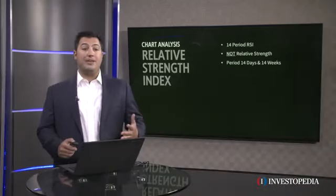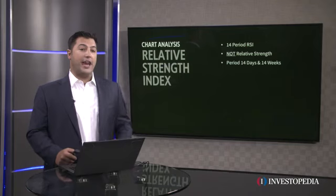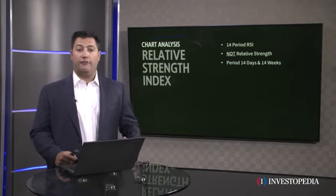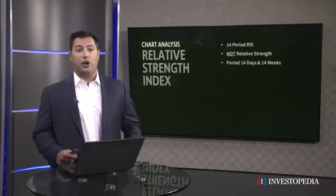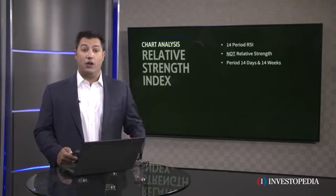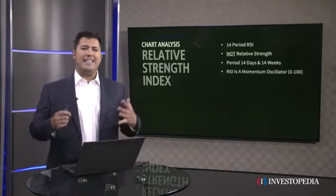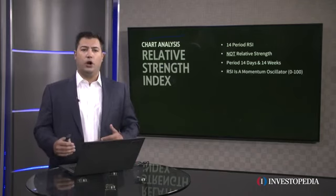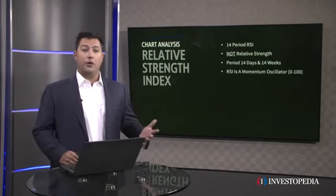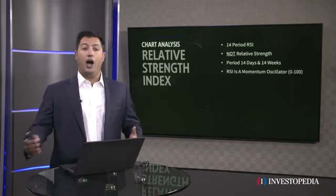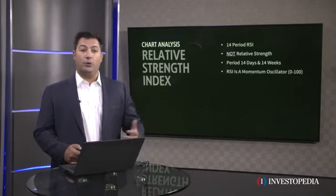So when we talk about RSI — the relative strength index — we are simply referring to a momentum indicator. When you hear me say 'period,' if we're looking at a weekly chart that means we're using a 14-week RSI, and if we're looking at a daily chart that means we're looking at a 14-day RSI. The indicator goes from zero to a hundred, which means it's an oscillator. So the RSI is a momentum oscillator that goes between zero and a hundred.